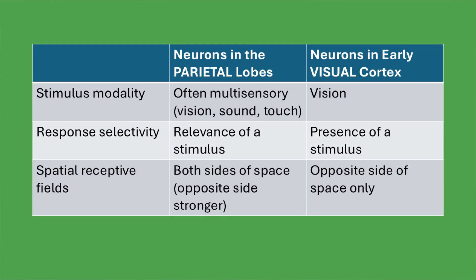For example, if a neuron is not expecting anything on the left side but all of a sudden there's a flash on the left, this would activate neurons in the parietal lobe, whereas an expected stimulus or one that is irrelevant and has been present for a long time might not. Similarly, if you're searching for red objects, neurons in the parietal lobe would respond more to red stimuli than to blue stimuli. But if the task changes to searching for blue, then the neurons would respond more to blue.